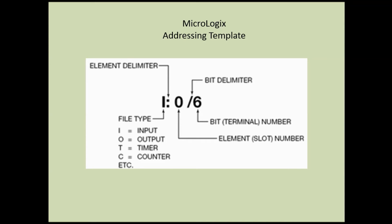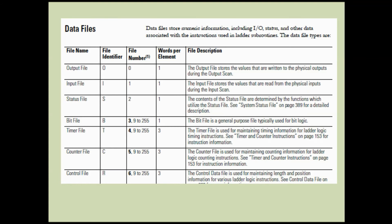When you have an input, you wire it into a module or input card, and the location for that information is I. The next number is the actual slot number. When you look at a PLC you have your power supply, your controller, and then the rest of your cards. Each of those cards has a slot number. In this instance we're using zero - if we have a power supply, the CPU, and then an input card, we say that's slot zero. Then you have a slash followed by the actual terminal number to which the input is wired.